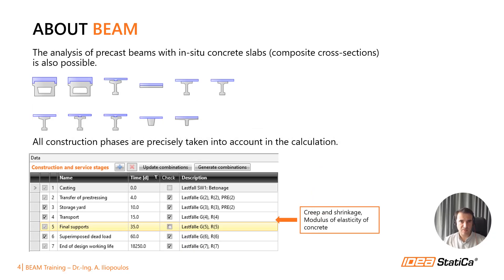As mentioned, BEAM allows the consideration of any composite cross-section, such as a pre-cast beam with C50/60 and in-situ concrete C35/45. This requires the investigation of loading stages before and after concrete hardening.